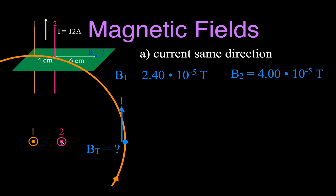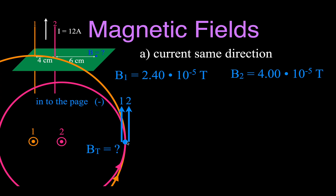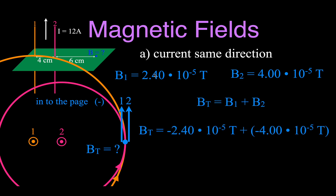The magnetic field from wire number two is pointing in the same direction because its current also flows out of the page — point your thumb out, wrap your fingers around, and it's also counterclockwise. Therefore, at that point, the magnetic field vector from wire two also points into the page. We would call both of these negative, since into the page is negative and out of the page is positive. Both flow in the same direction, so we add them: −2.40×10⁻⁵ plus −4.0×10⁻⁵ gives −6.40×10⁻⁵ teslas.